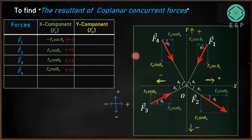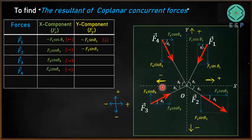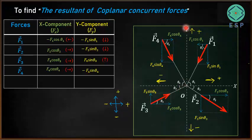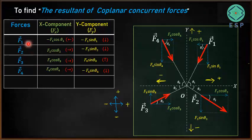Now let's see the Y components. F1 sin theta 1 is acting in the downward direction — that is the negative direction of the Y axis — so it is negative. Similarly, F2 sin theta 2 is also negative. F3 sin theta 3 is acting upward, in the positive direction of the Y axis, so it is positive. F4 sin theta 4 is acting downward again — negative direction of the Y axis — so it is negative.